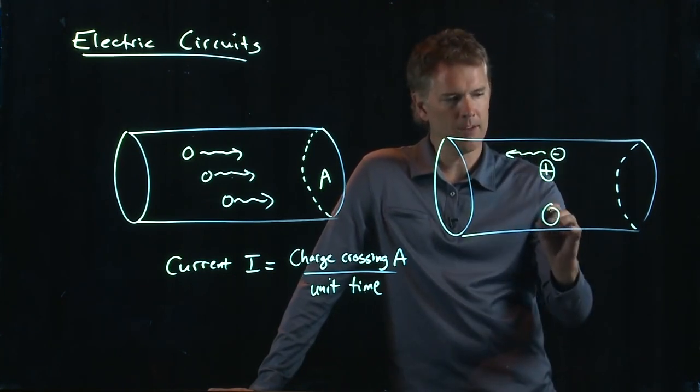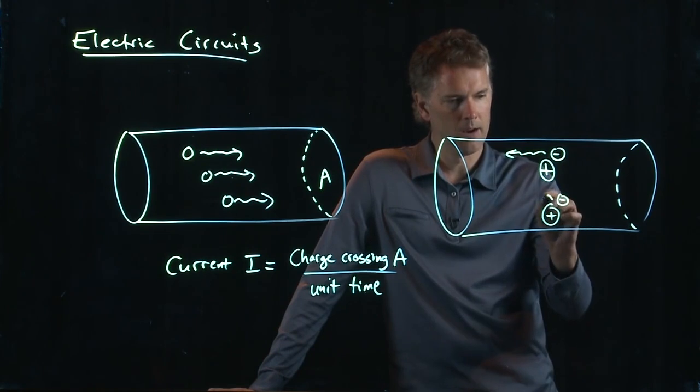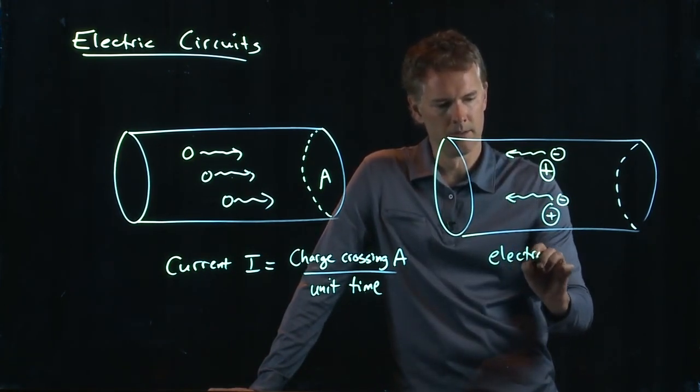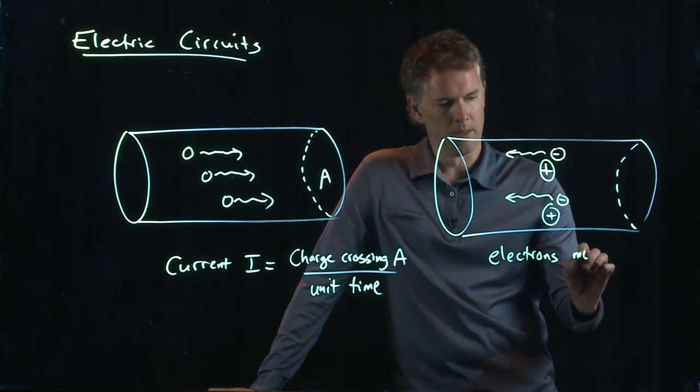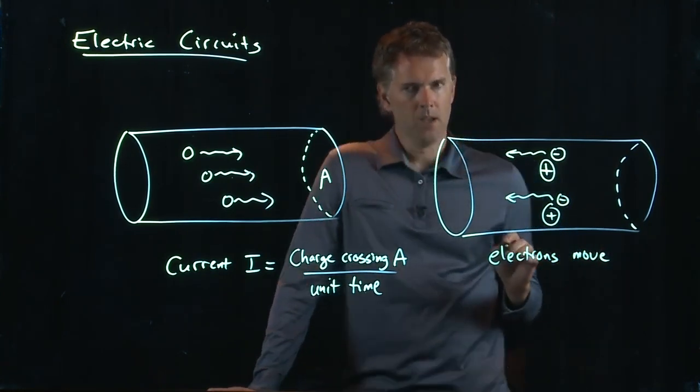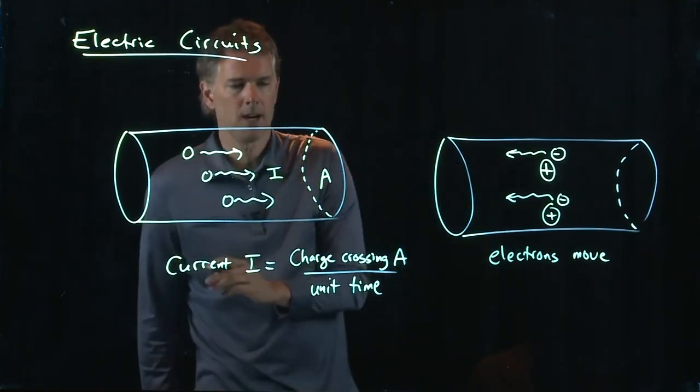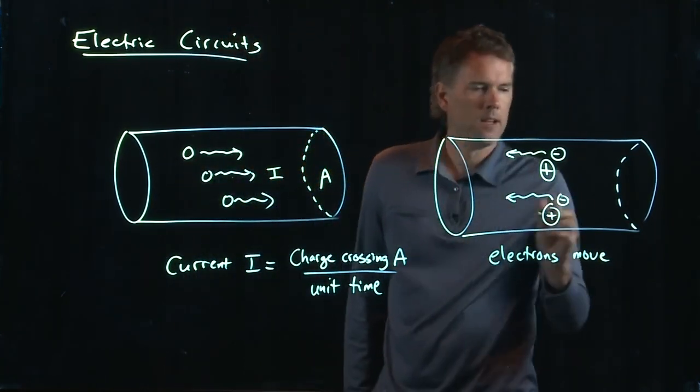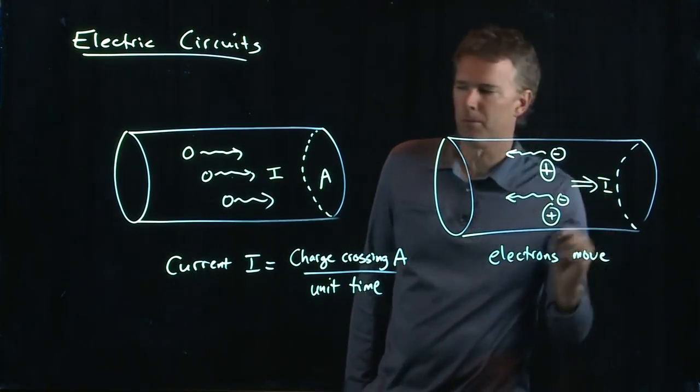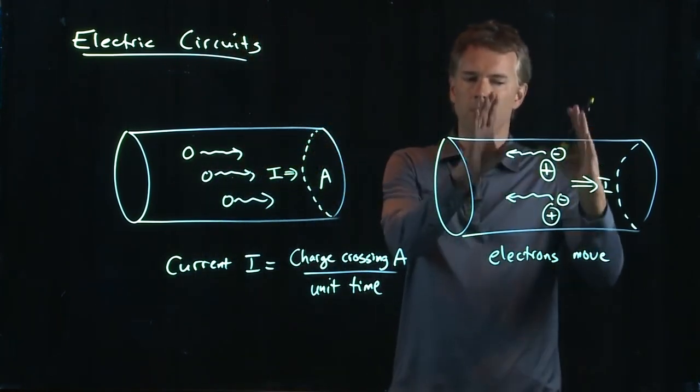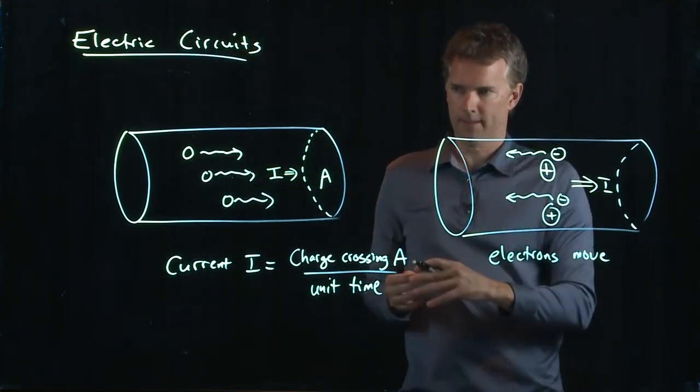Okay, the positives stay where they are. The electrons are the things that move. And here's the deal. If the current i is to the right, then the current i here is still to the right, even though the electrons are moving to the left.